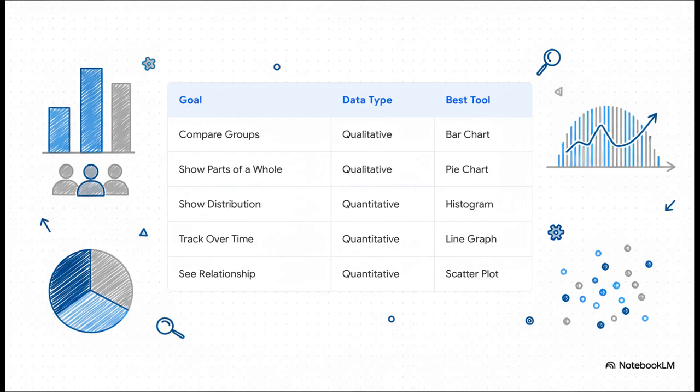Want to see how your numbers are spread out? Use a histogram. Are you tracking changes over time? That's a job for the line graph. And finally, if you need to see a relationship between two sets of numbers, the scatter plot is what you need.